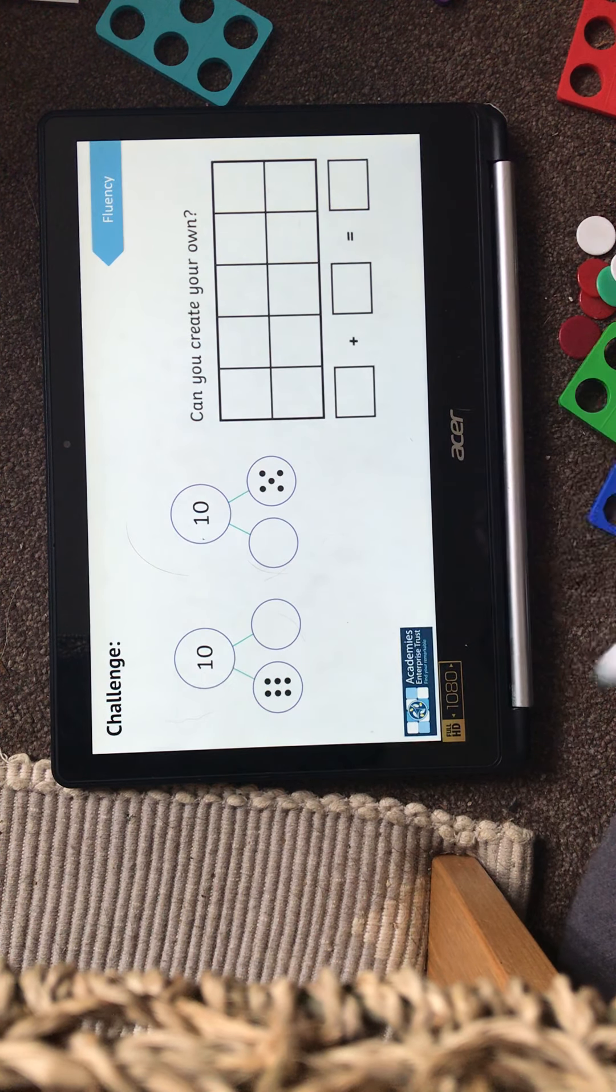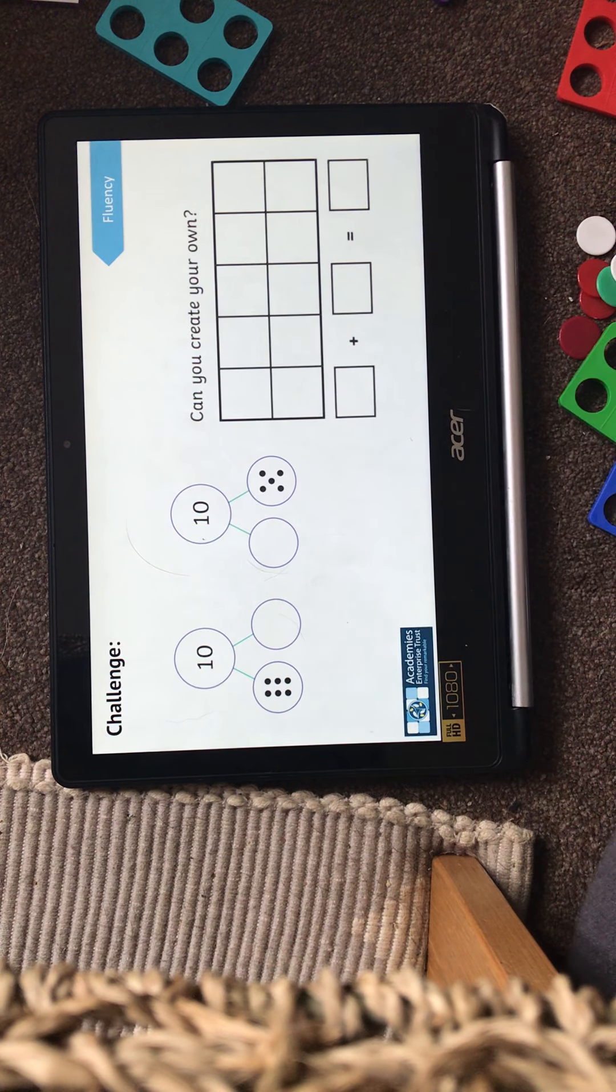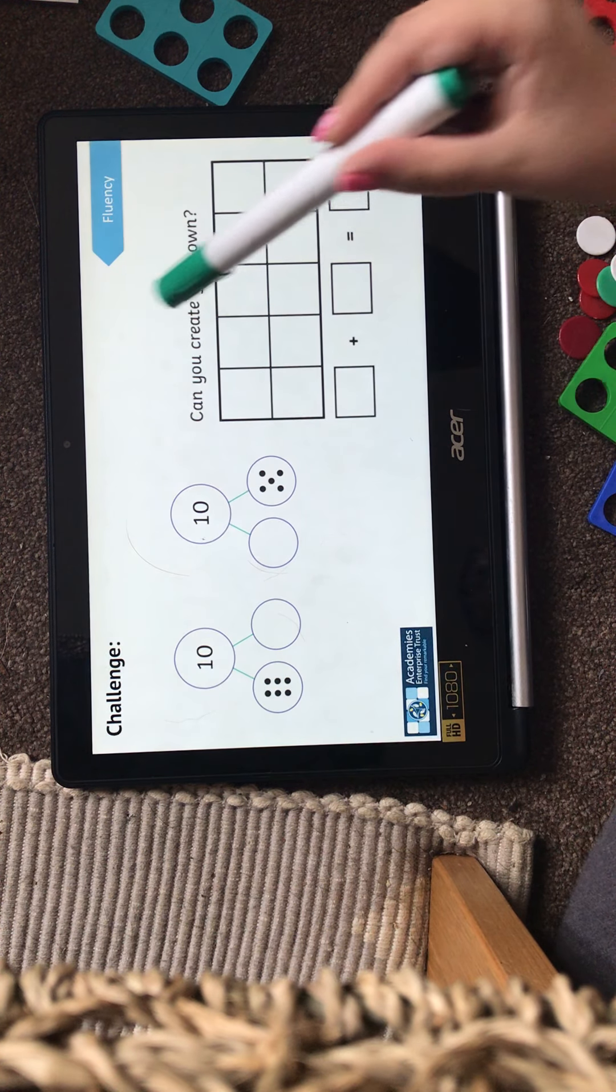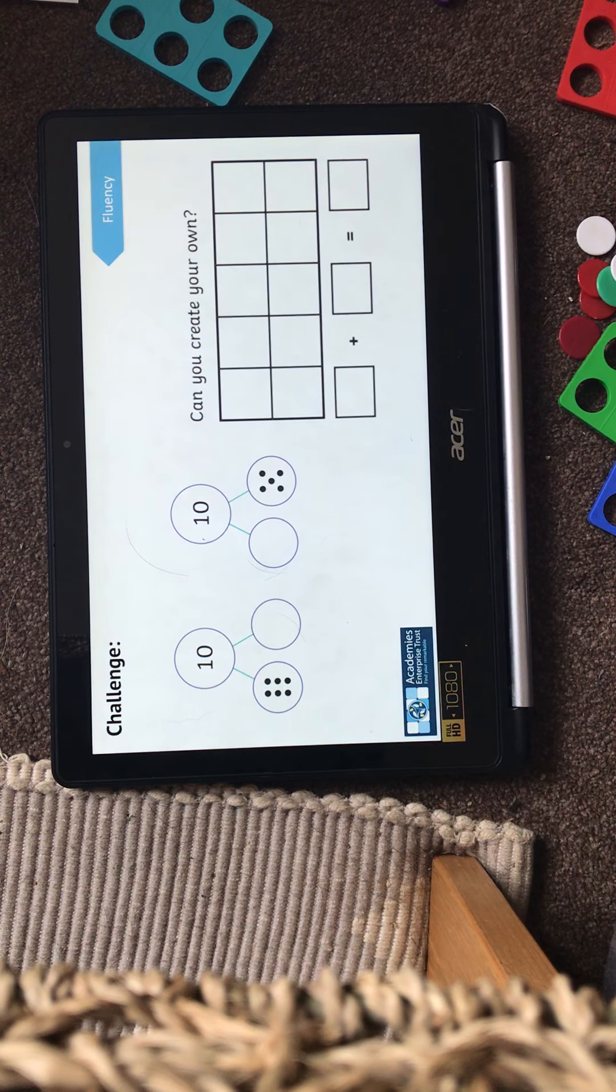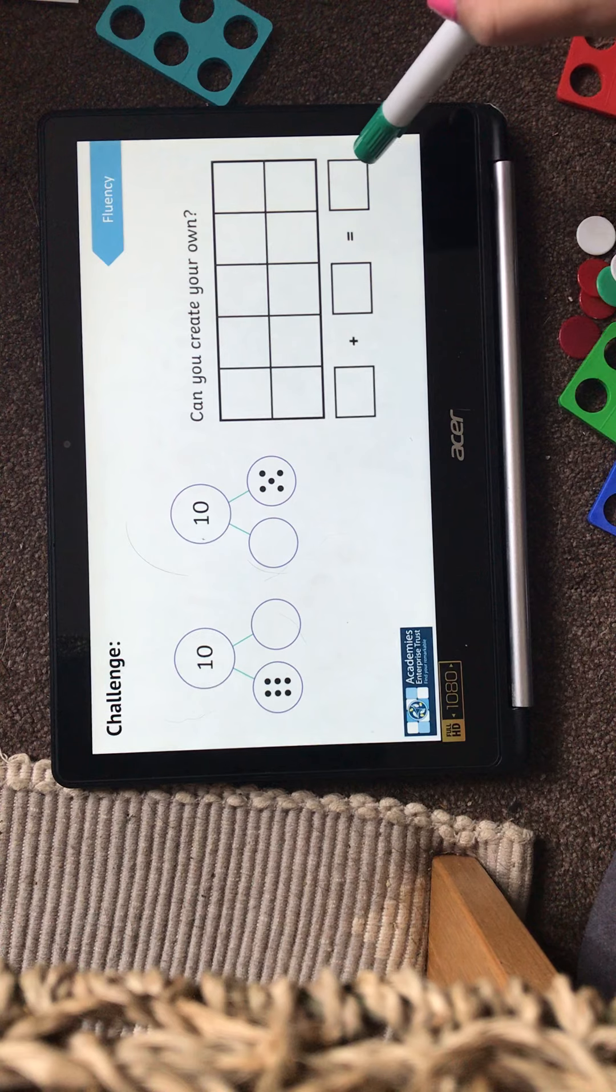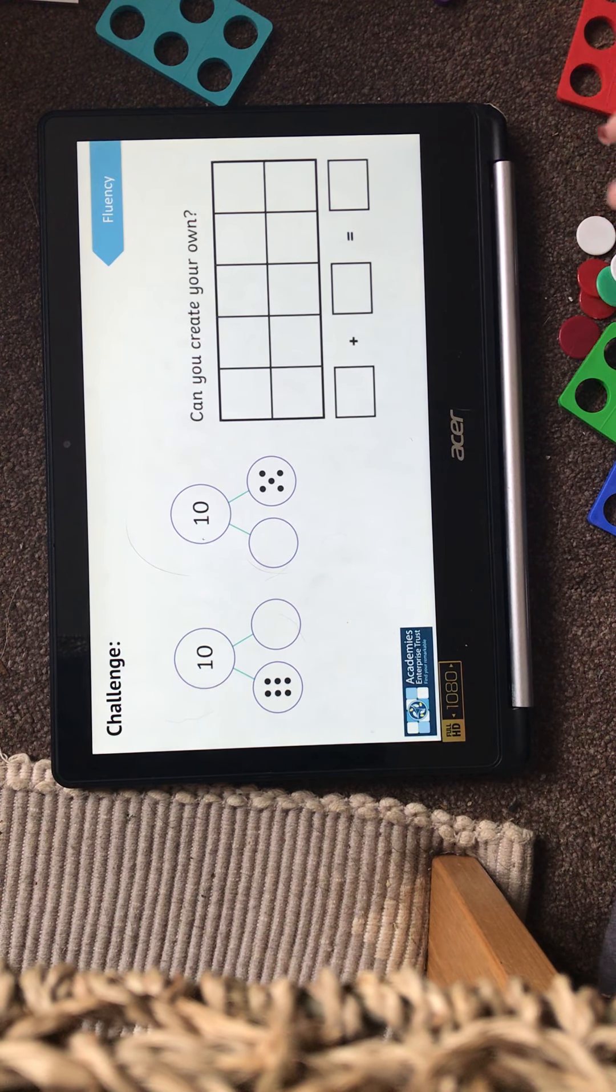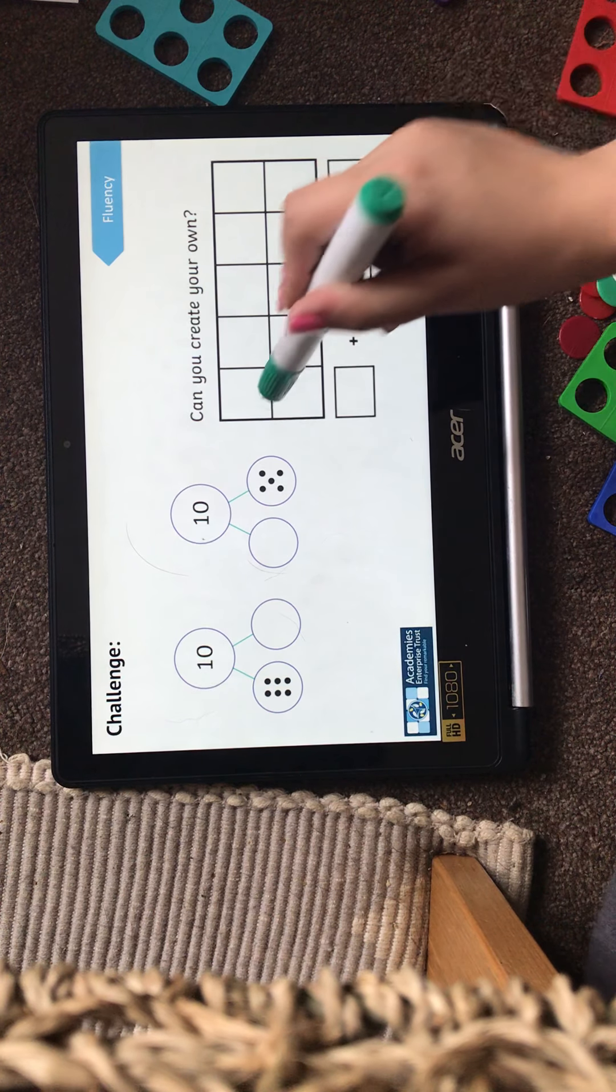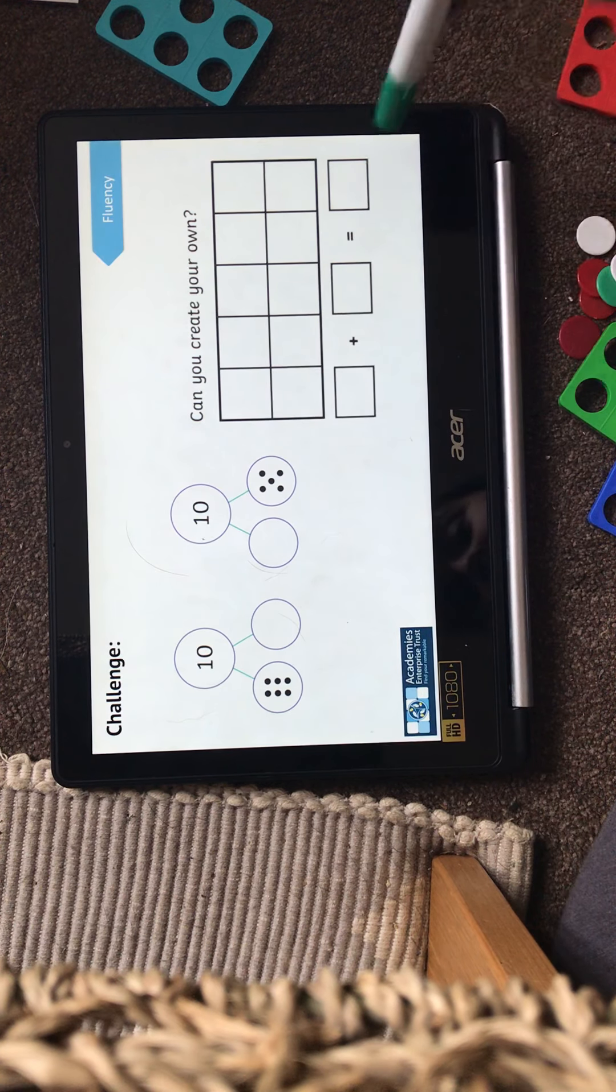Your challenges look a bit like this. So you've got your, we call these part whole models. So you can create your ones of these. And if you really want to challenge, you can create your own 10s frame. So think of a question. For example, 2. What do I need to add to 2 to get to 10? And then you can draw your circles, maybe in different colours or different patterns to show that calculation.